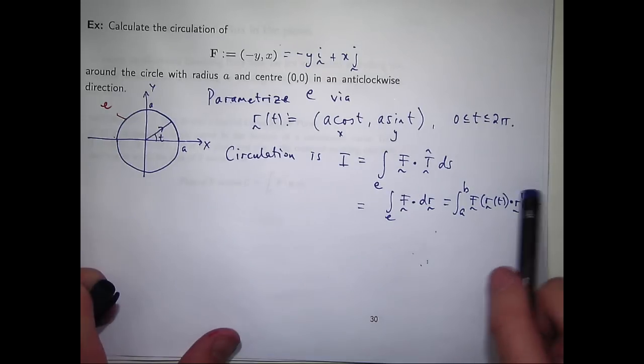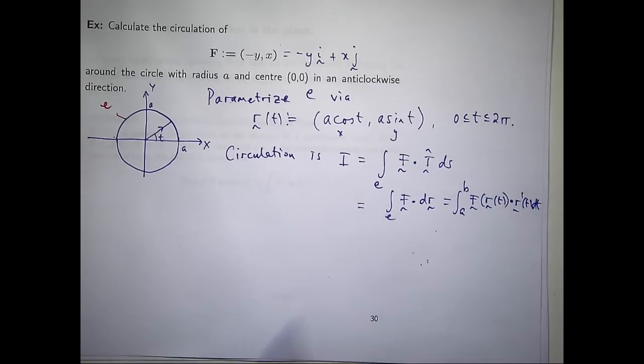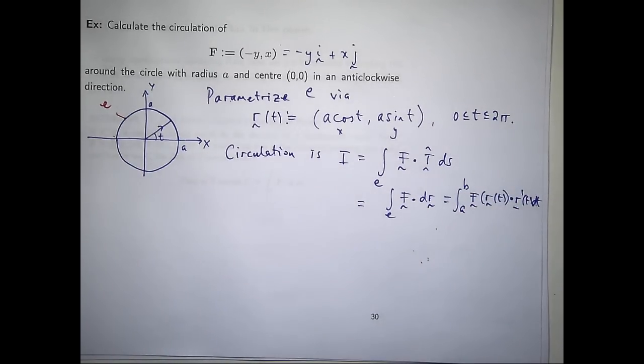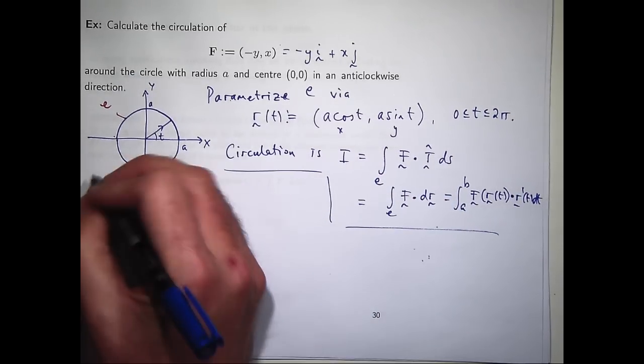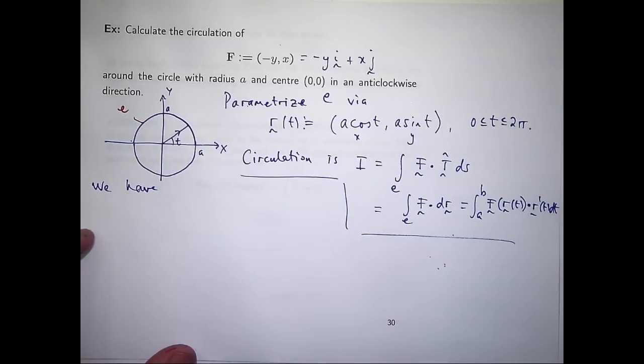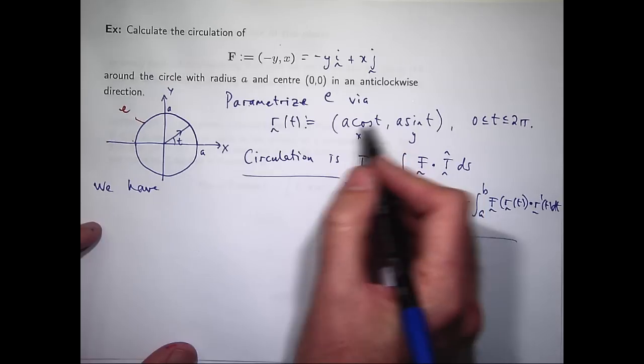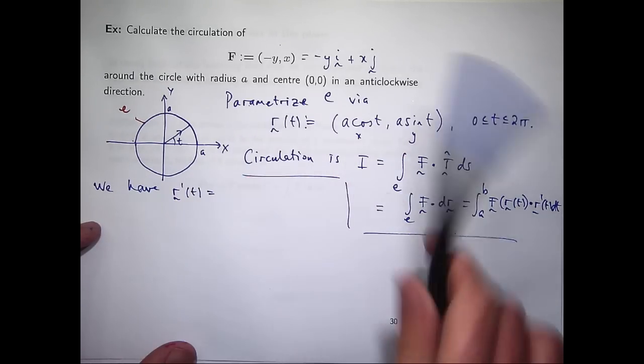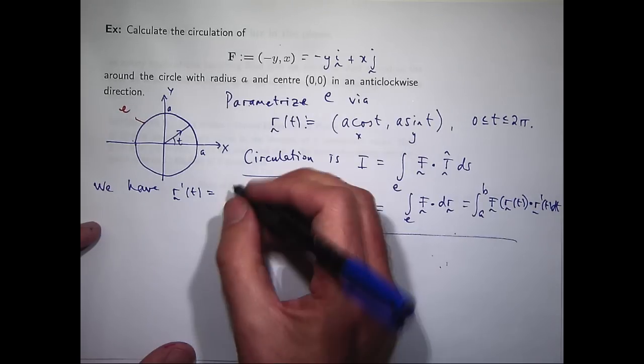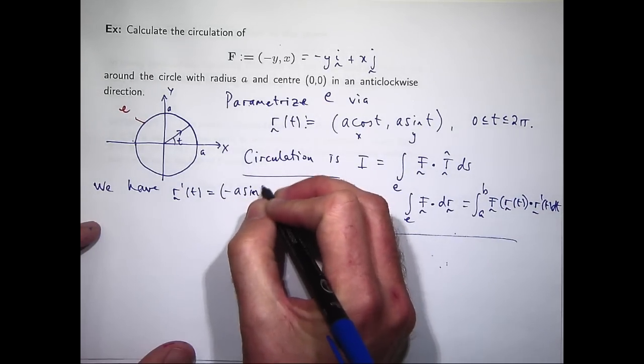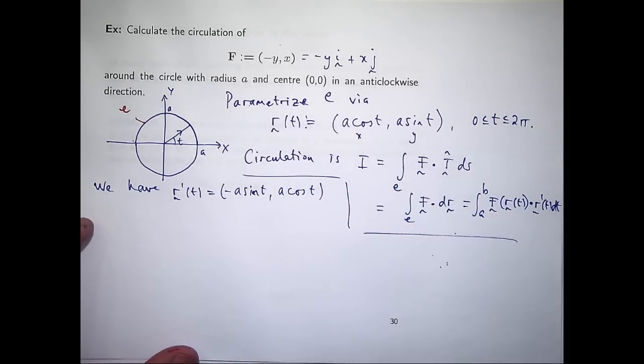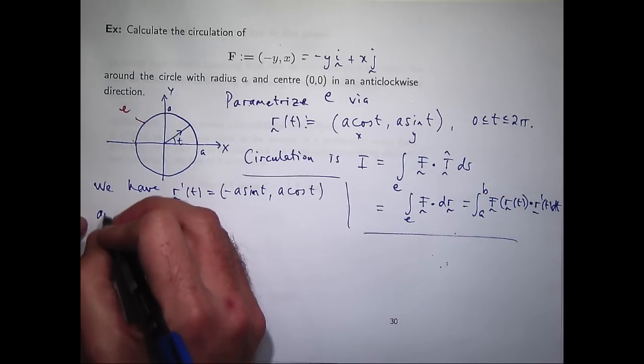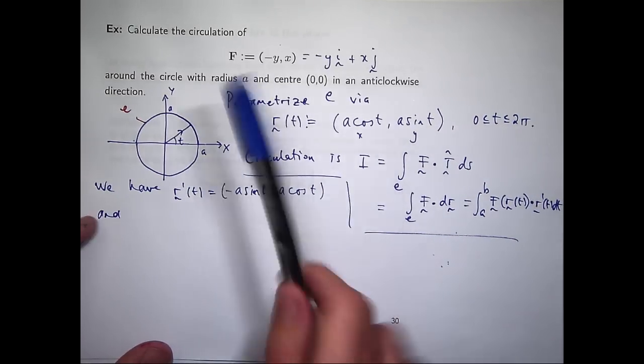So essentially what we do is we will work out the tangent vector, work out this, dot them together and integrate. The a and b would be respectively 0 and 2 pi. So we have the following. Let's differentiate this component-wise with respect to t. If I differentiate the first component with respect to t, I'll get minus a sine t. And if I differentiate the second component, I'll get a cosine t.